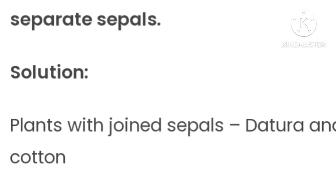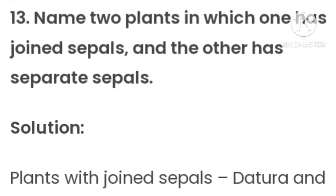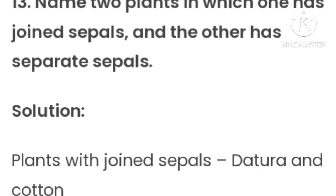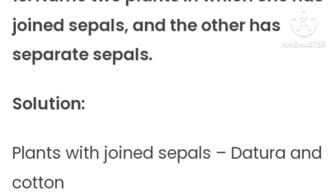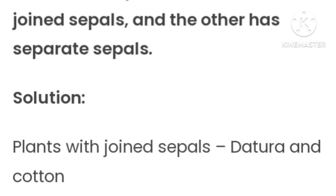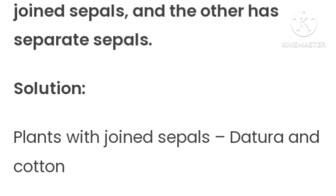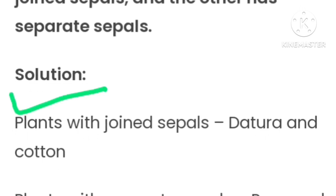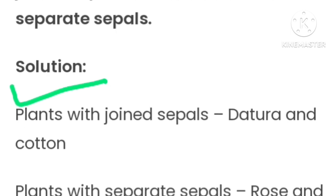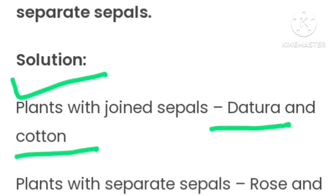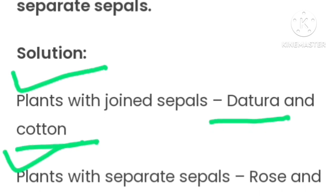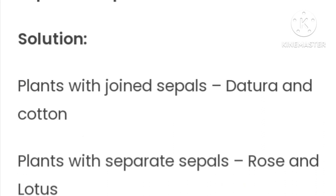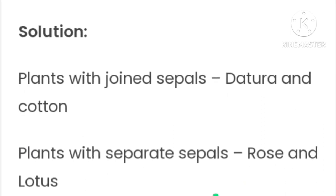Question number thirteen: Name two plants in which one has joined sepals and the other has separate sepals. Plants with joined sepals: Dhatura and Cotton. Plants with separate sepals: Rose and Lotus. Now your exercise is completed.